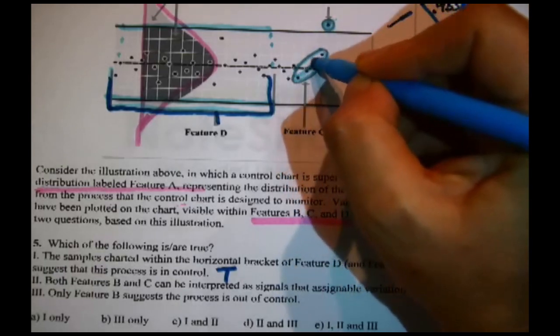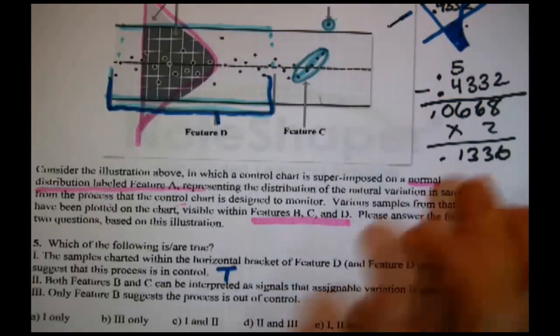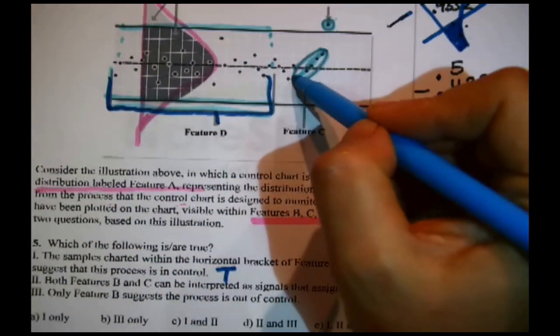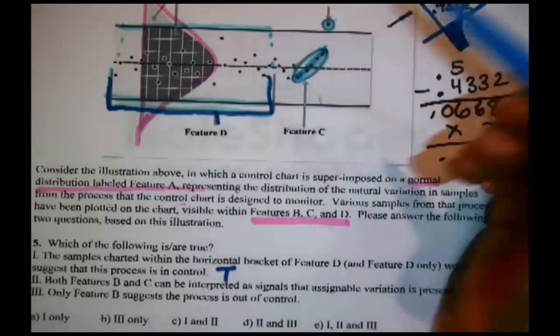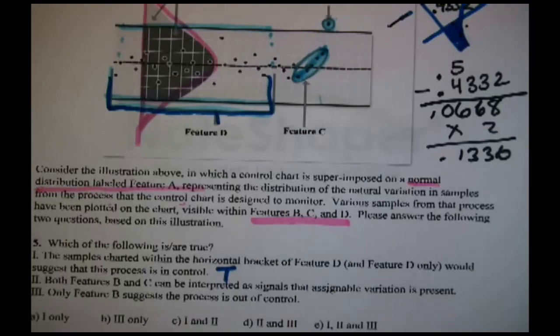Now, that's only one of three statements. Both Features B and C can be interpreted as signals that assignable variation is present. This is Feature B. It's just one of the samples except it's outside the limits. Notice that. Feature C is indicating several samples. They are inside the limits. But do you notice that there's a pattern? Unlike up and down, up and down, up and down, all of a sudden, we have a group of them. And if you look, they're basically lining up. They're creating what's known as a run. Both of those are by definition considered symptoms of assignable variation. They're signaling that assignable variation, something that's happening for a reason, is present in the system. So, this is true.